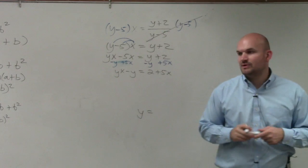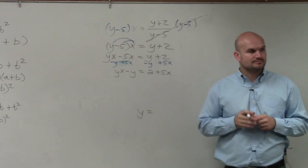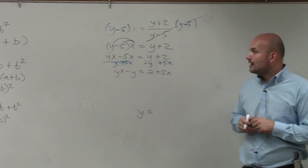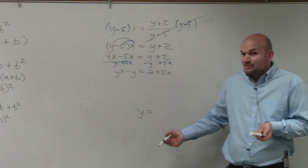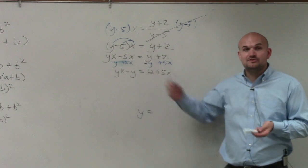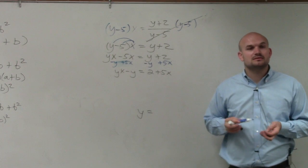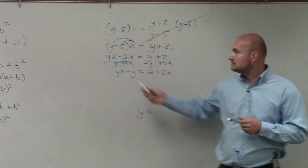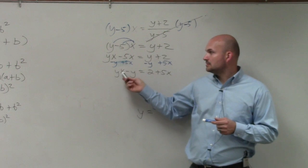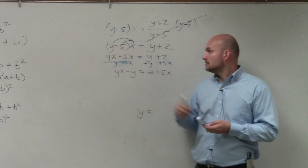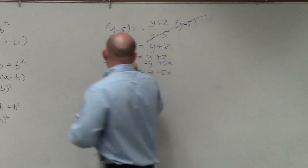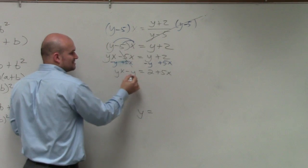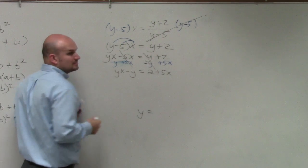By doing that, I now obtain yx minus y equals 2 plus 5x. We still need to solve for y — y is not by itself, now we have two y's. The problem is we can't subtract y from yx because they're not like terms. One has an x multiplied by it and one does not.